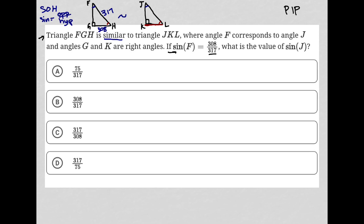Now, this helps me because I can label KL as 308X, where that X represents this unknown value I'm multiplying by 308, representing the fact that it's proportional to 308. And same thing with my hypotenuse — it would be 317X.